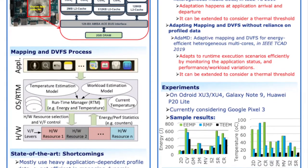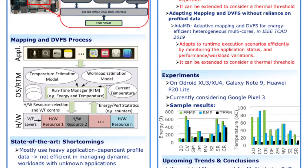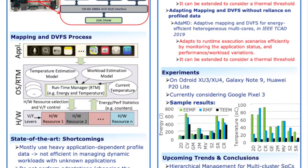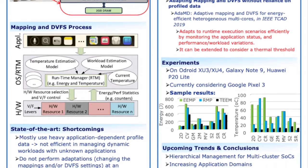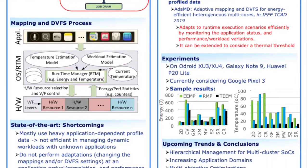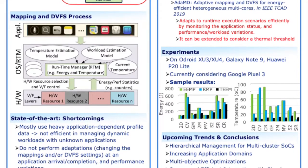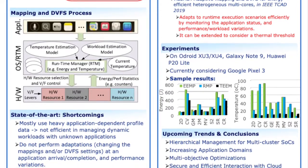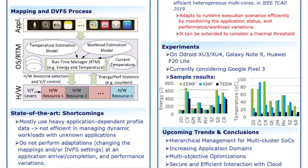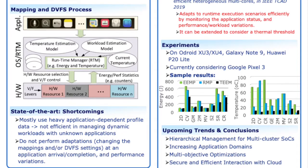When you look at the state-of-the-art approaches, you will find that most of them use heavy offline computations, which is not efficient for applications that will be unknown at runtime. Also, most of them do not perform adaptations — that means they are not changing the mapping and DVFS at application arrival and completion, or when performance varies.